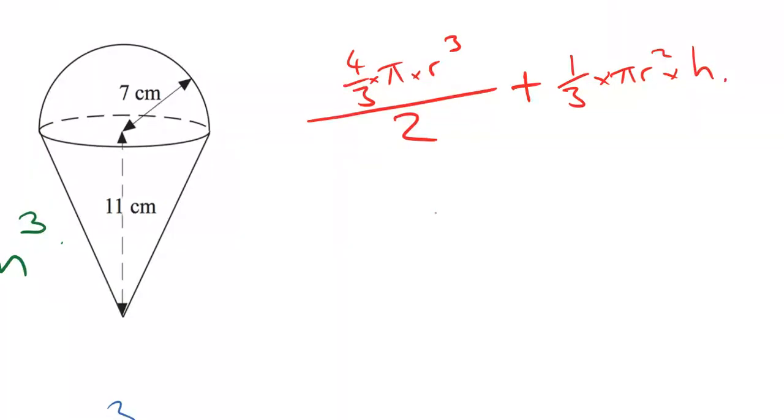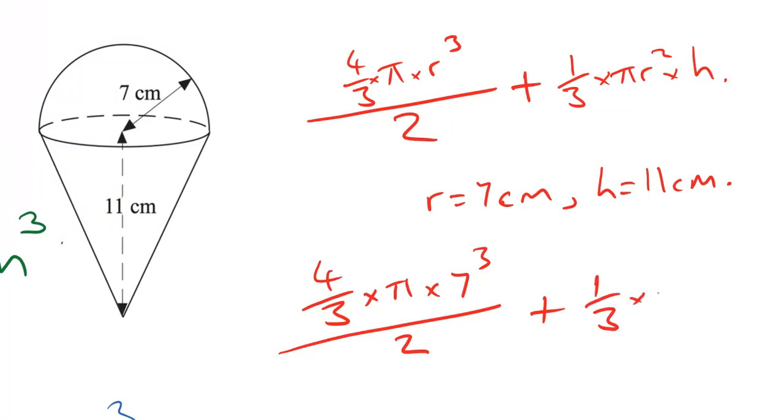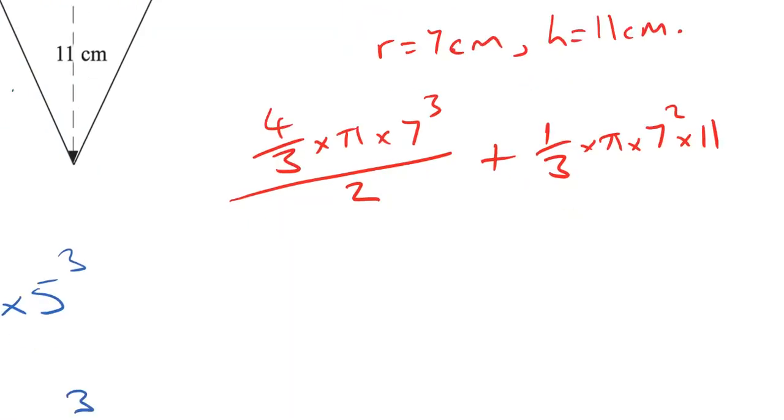h in this case is going to be 11. So let's write down those variables. We've already worked out r - we can see r is 7 centimeters. h on that cone is going to be 11 centimeters. So we're just going to sub numbers in: 4 over 3 times pi times 7 cubed, all divided by 2, plus a third times pi times 7 squared times 11. That's the complex sum we're going to do on our calculator. Now you can type this all out on one line of your calculator if you want, or what you could do is just do it in stages and then write down those answers. So I will work out them individually.